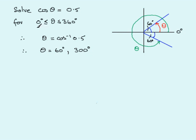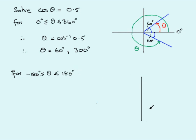That was for the common range 0 to 360 degrees, but quite often you'll be asked to solve in other ranges. Another common range is theta between minus 180 and 180 degrees. We do exactly the same — draw the quadrant diagram, put in 0 degrees, ask where cosine is positive: first and fourth quadrants, and draw two lines equally inclined to the horizontal.